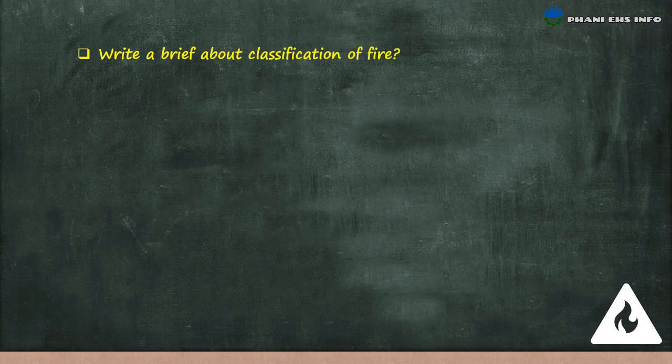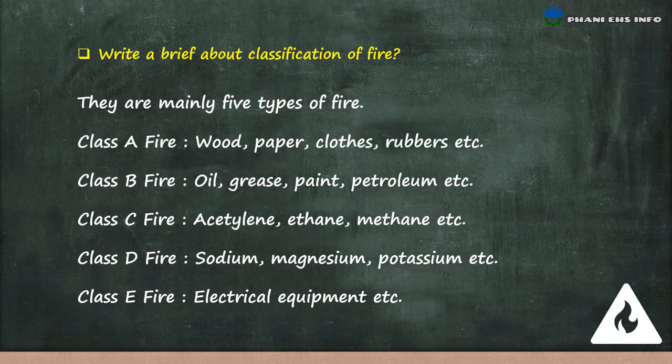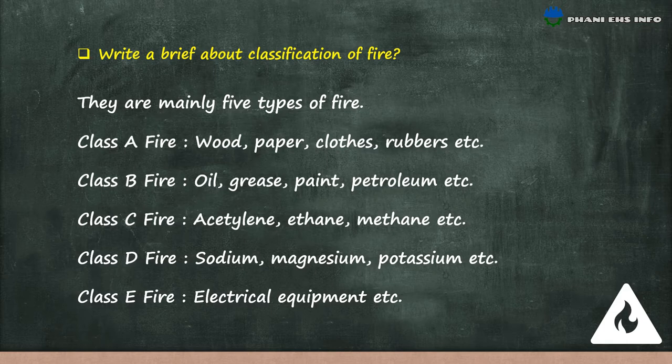Write a brief about classification of fire. There are mainly five types of fires. Class A: wood, paper, cloths and rubber. Class B: oil, grease, paint, petroleum. Class C: acetylene, ethyl and methane. Class D: sodium, magnesium and potassium. Class E: electrical equipment.